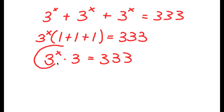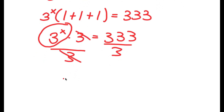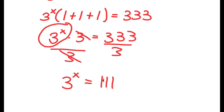Now I want to isolate 3 to the power of x. I'll get rid of the times 3 by dividing both sides by 3. So now I get 3 to the power of x is equal to 111.